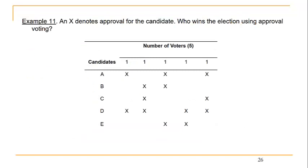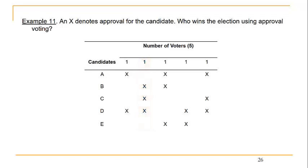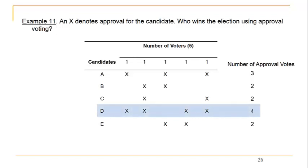Here's an example with five people voting between candidates A through E. An X denotes approval for that candidate. The first voter approves of candidates A and D only; the next voter approves of B, C, and D, and so on. We simply add the number of approval votes each candidate receives: candidate A receives three, B gets two, C gets two, D receives four, and E receives two. Since candidate D received the most approval votes with four, candidate D wins this election.